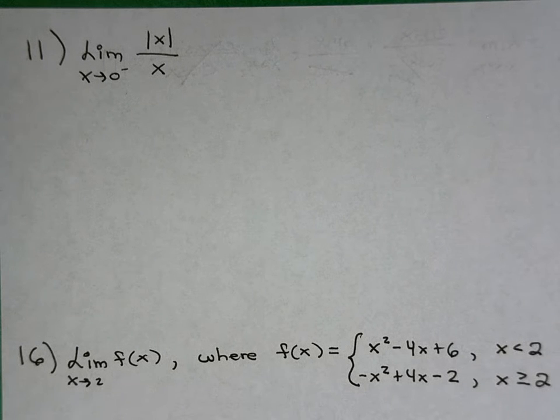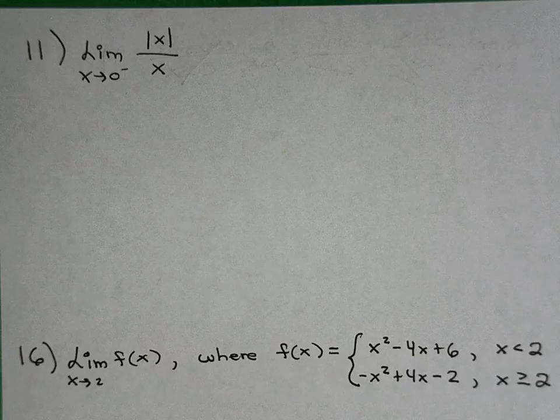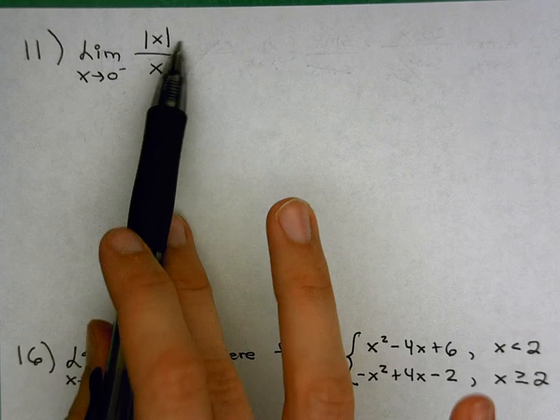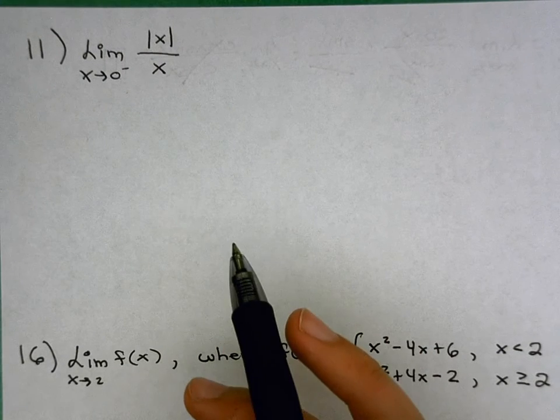Number 11 says find the limit as x approaches 0 from the left of the absolute value of x over x. So in solving problems analytically, our first step is always going to be to plug that number in and just see, do I get a number or do I get a number over 0? In which case, I'd have my answer.